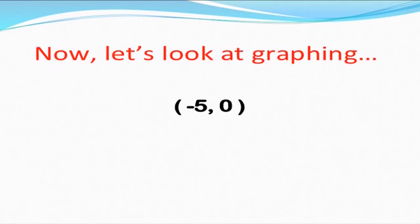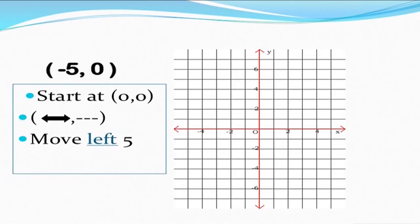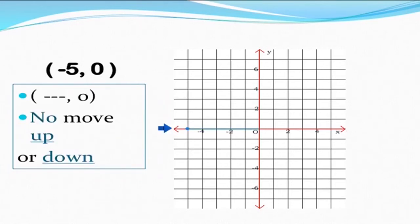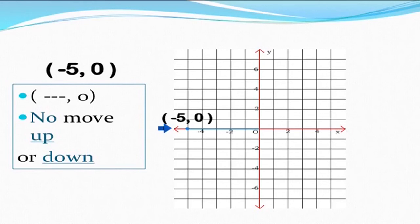Now let us look at graphing (-5, 0). As the x-coordinate is -5, we move left from the origin on the x-axis by 5 points. As the y-coordinate is 0, we do not need to move up or down from the origin on the y-axis. The point we find is at (-5, 0), which lies on the x-axis. So the conclusion is: if the y-coordinate is 0, the point will lie on the x-axis.